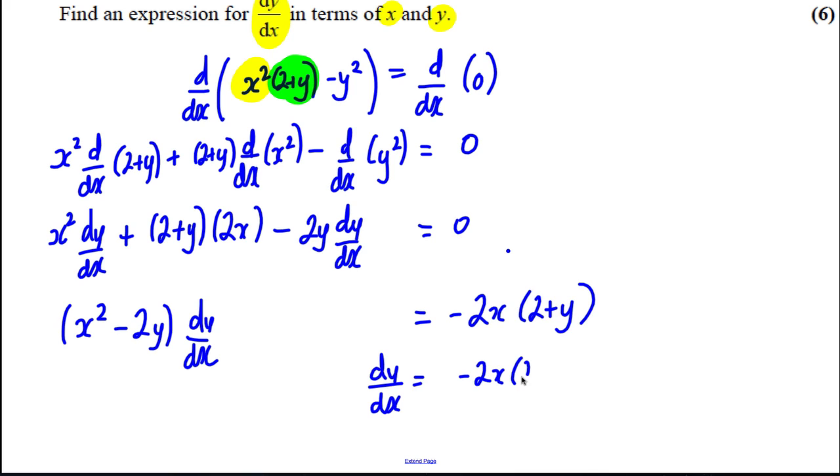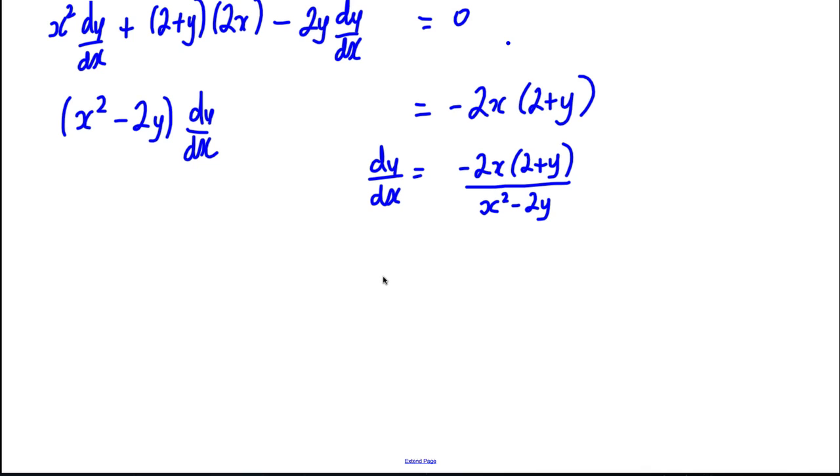x squared subtract 2y, like that. And I could rewrite this without a negative sign there if I wanted to - that's 2x times 2 plus y all over 2y subtract x squared. Either of these is sufficient.